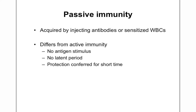The protection conferred in passive immunity is for a short time, because every antibody has a specific half-life. After the half-life, the antibody is removed from circulation by protein turnover. The minimum half-life is 5 days for IgM antibodies and 23 to 25 days for IgG antibodies, so the protection may extend up to about 23 days.